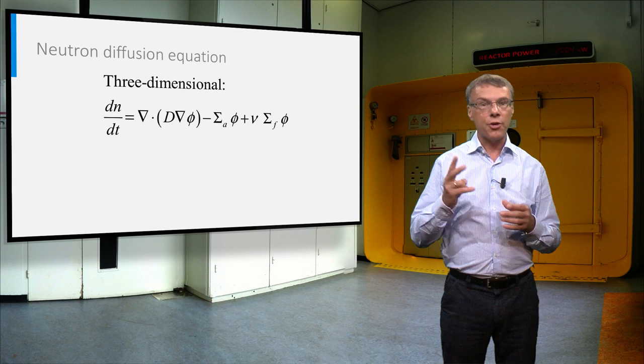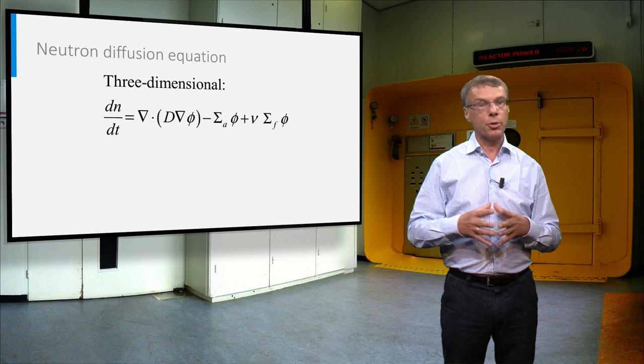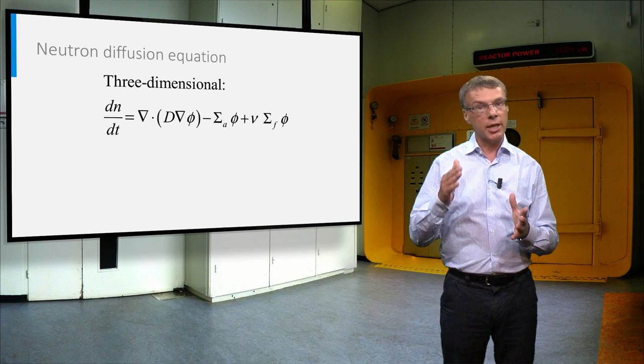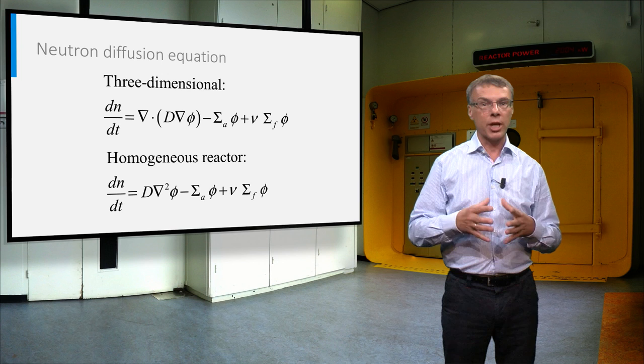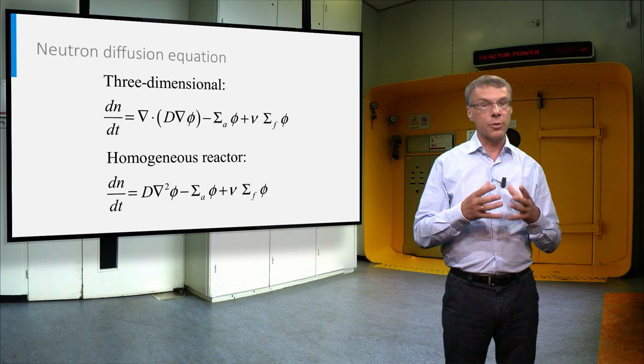This equation shows the same expression for the three-dimensional case, where d phi dx is now replaced by the NABLA operator. NABLA stands for the three-dimensional derivative in all three directions, x, y and z. If we would have a homogeneous reactor core, the diffusion coefficient would not be spatially dependent anymore, and the equation would become as in the bottom line.